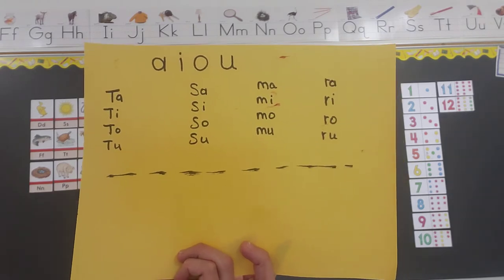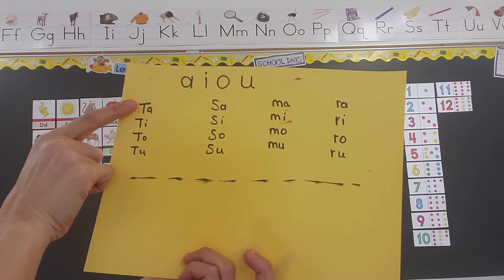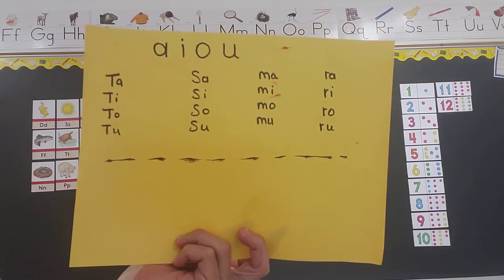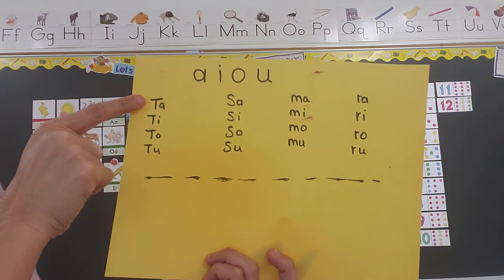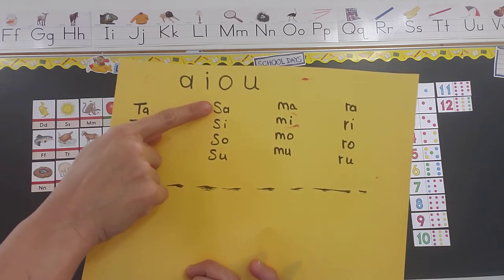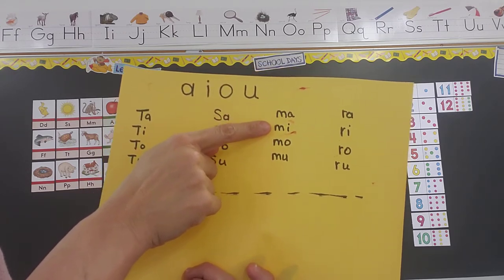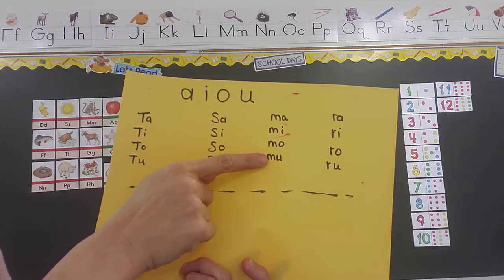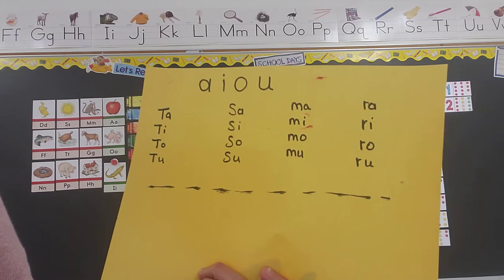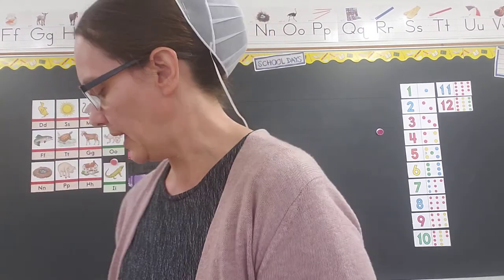I think we're going to start going over these every day. Let's do the T's one more time — everybody's got to help me this time, okay? Are you ready? Ta, ti, to, tu. S side: sa, si, so, su. Ma, mi, mo, mu. Ra, ri, ra, ru. That's putting two sounds together — that's enough of that. We'll practice more on that later.